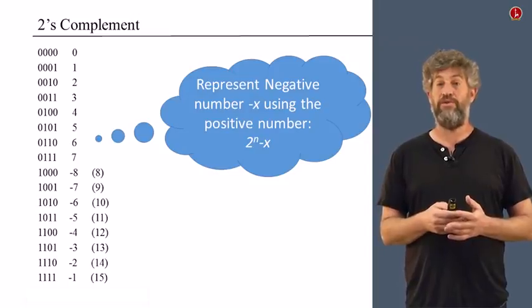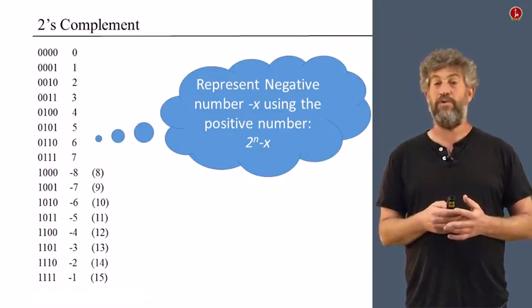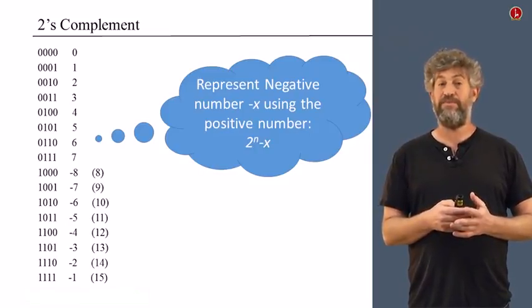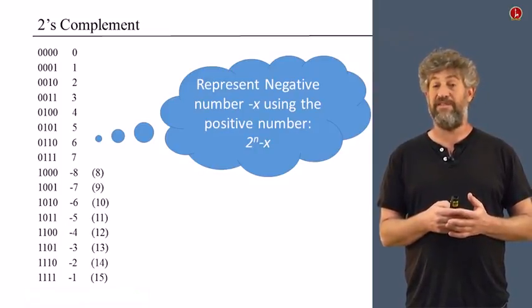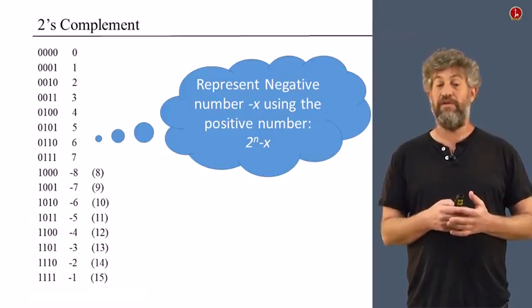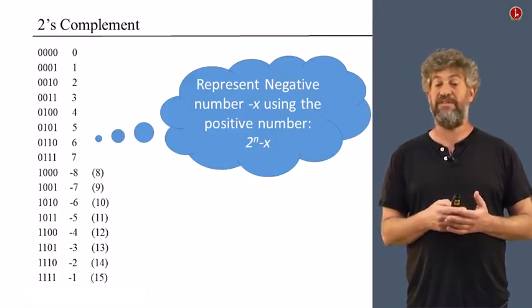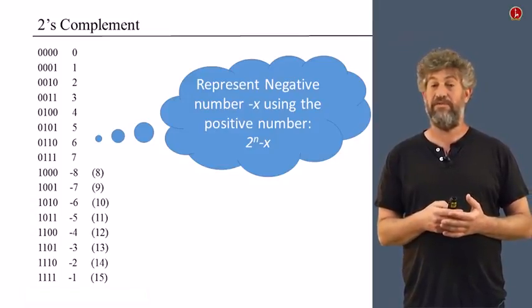For example, in our case, here are the numbers. You have 0, 1, 2, all the way up to 7 as usual. Now, if you want to represent, let's say, negative 3, well, you represent negative 3 by the integer 16 minus 3, which is 13. So if you look at the place 1, 1, 0, 1, which is really the binary number 13, the value of that is negative 3.